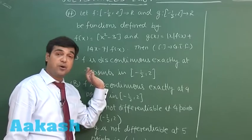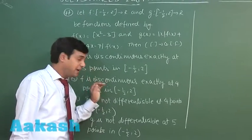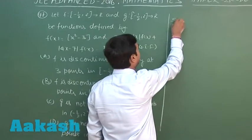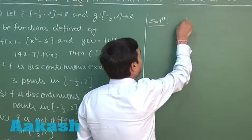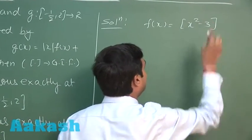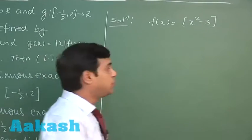Then which of the following are correct? We have to talk about the continuity, discontinuity of f, and non-differentiability of g. Function f(x) is given to me as greatest integer of x squared minus 3.